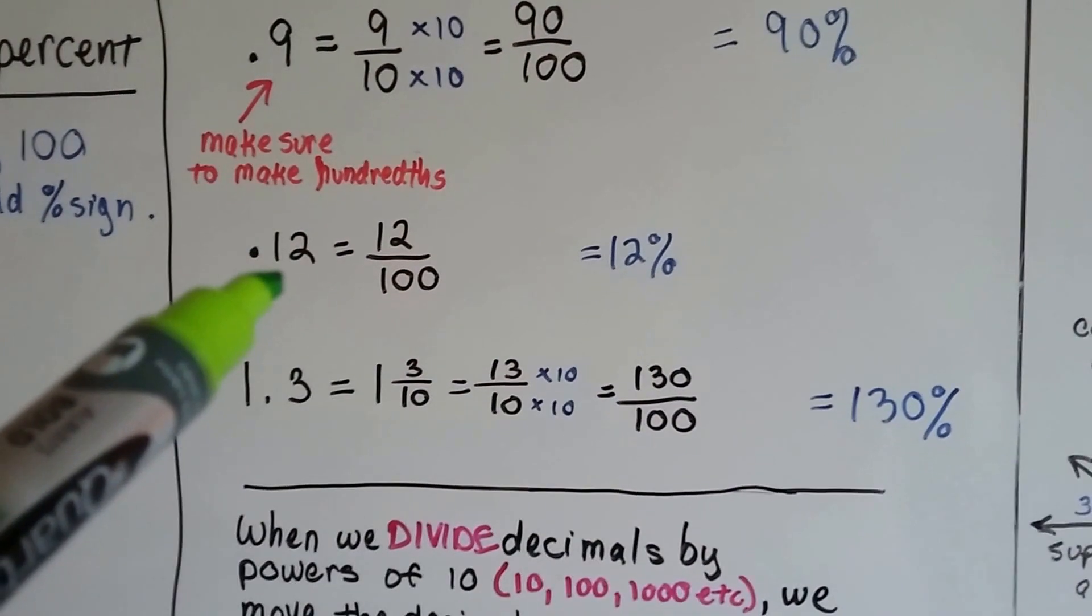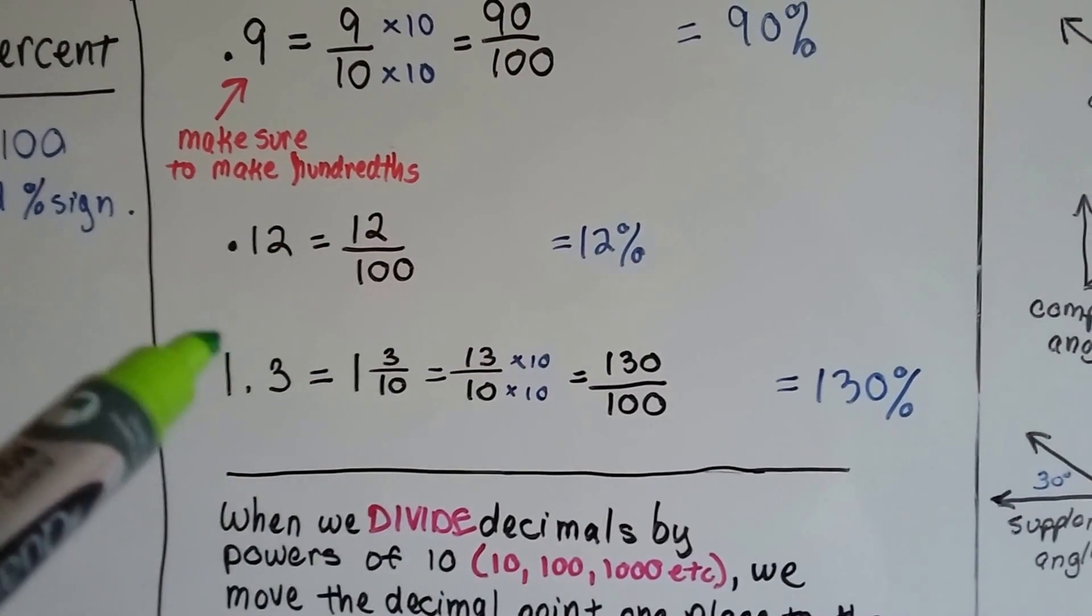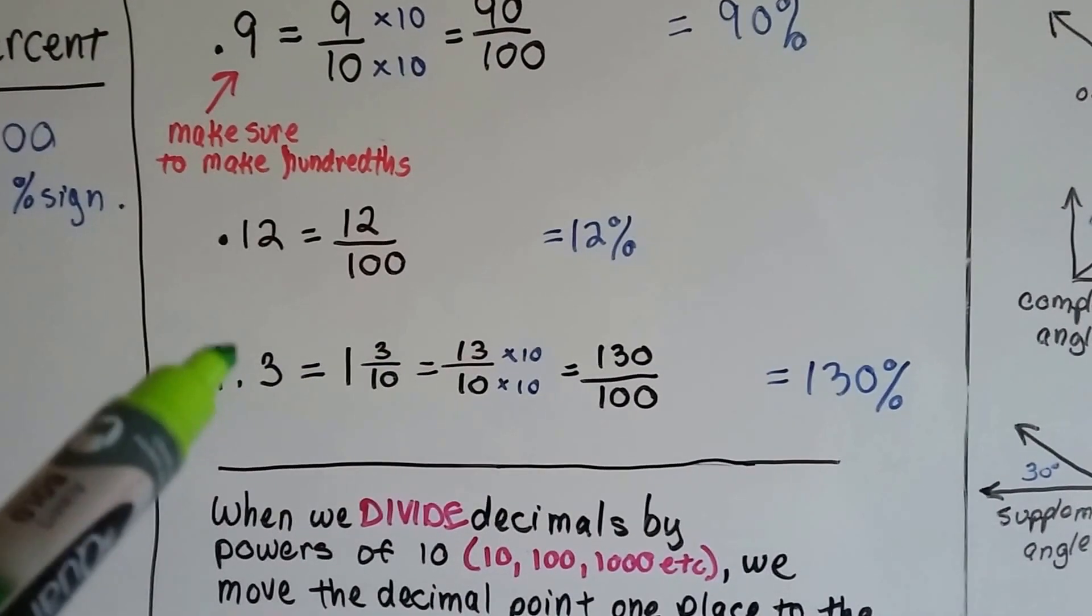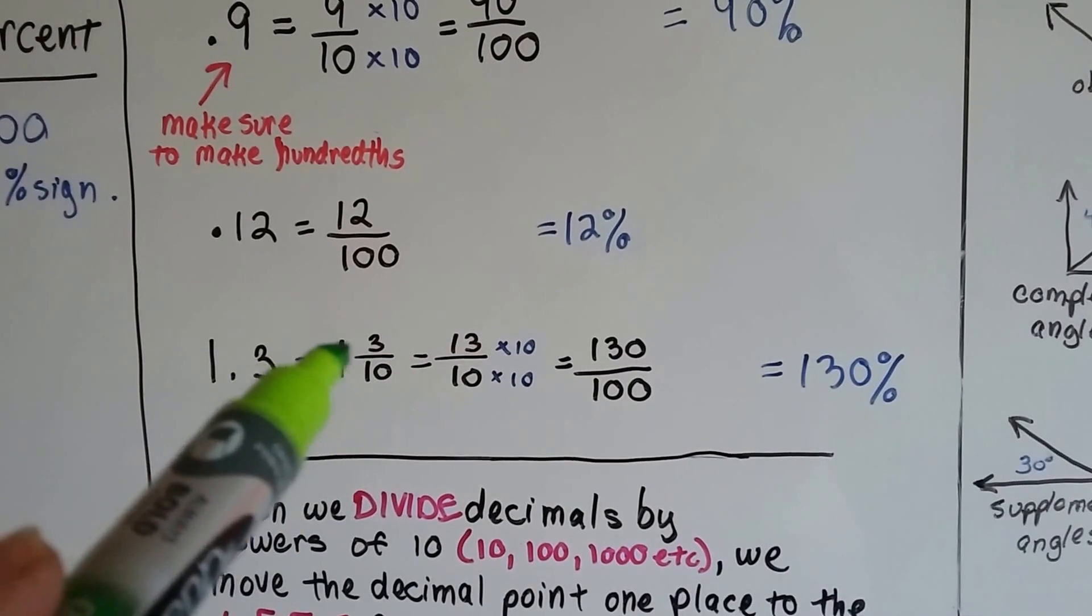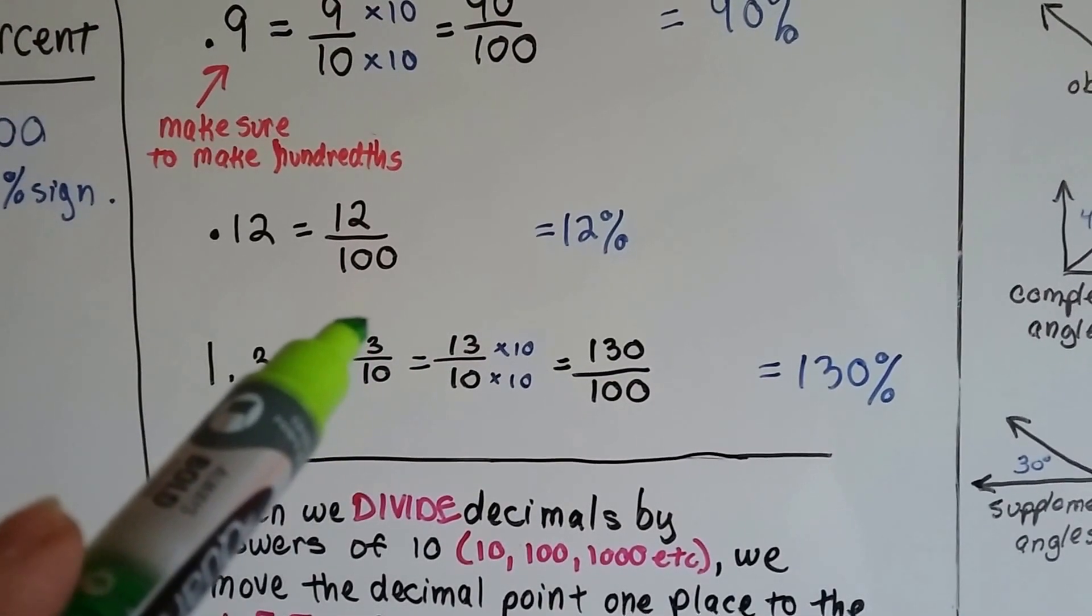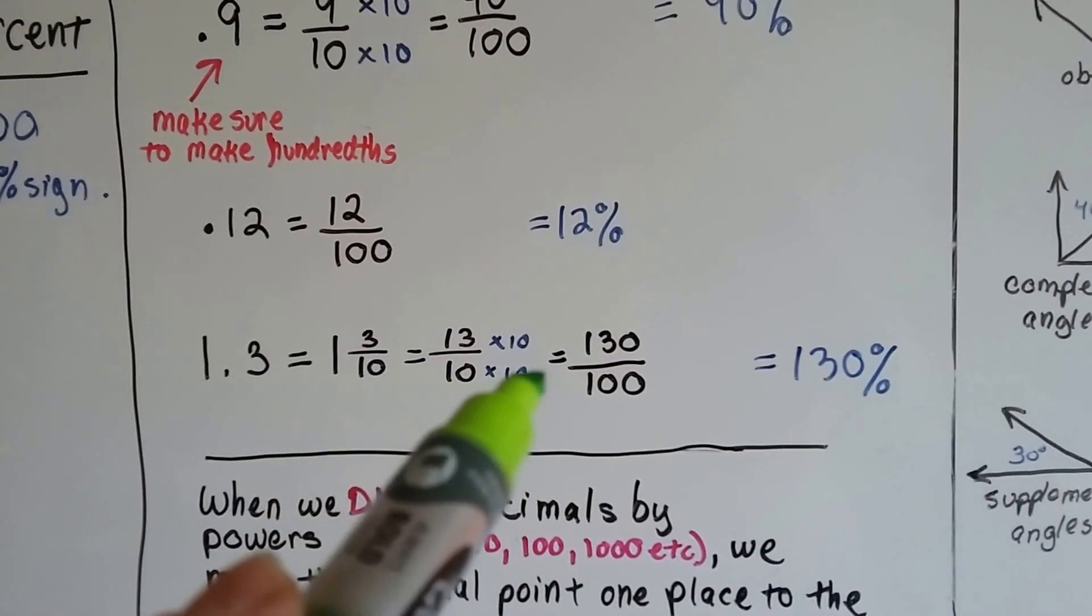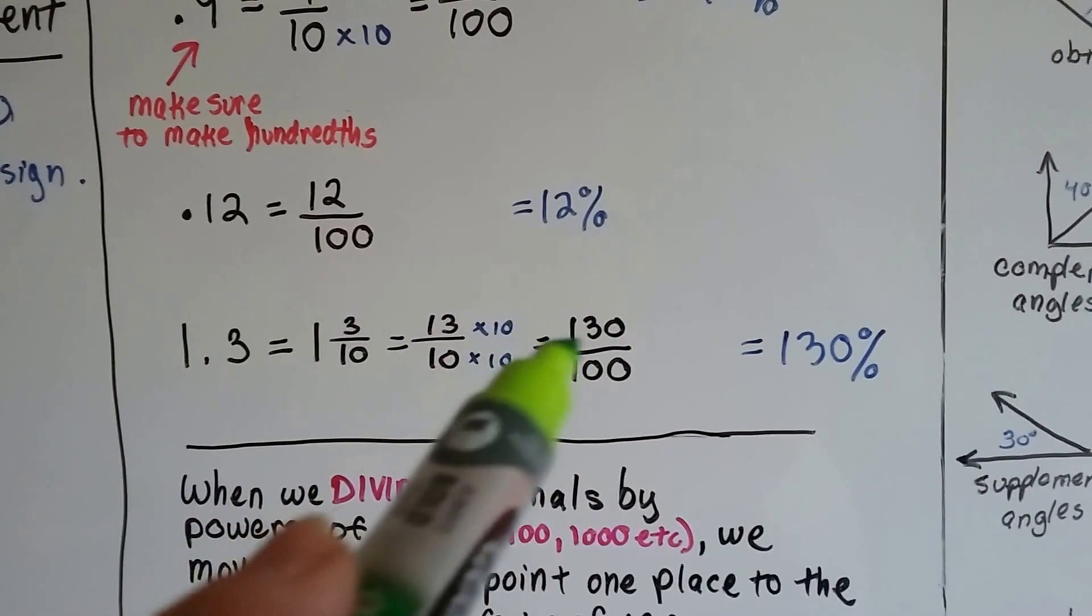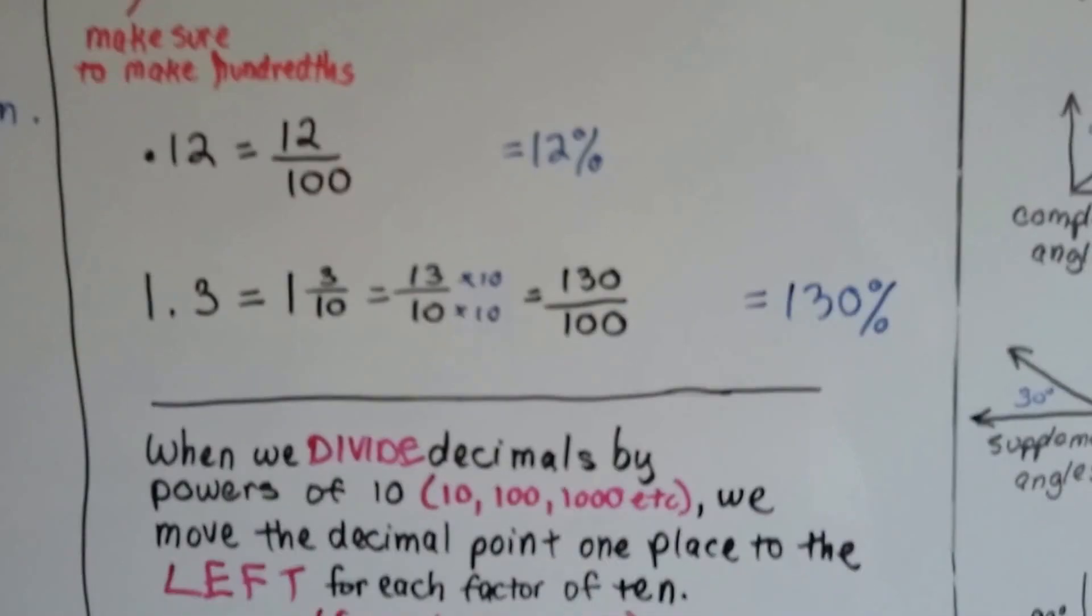If we have .12, 12 hundredths, we know it's 12 over 100. We know it's 12%. If it's 1.3, we know it's 1 and 3 tenths. That's what that means. So we turn it into an improper fraction. 1 times 10 is 10 plus the 3 is 13. So it's 13 over 10 as an improper fraction. We multiply it by 10 to become 100, so we have 130 over 100. So we have 130%.